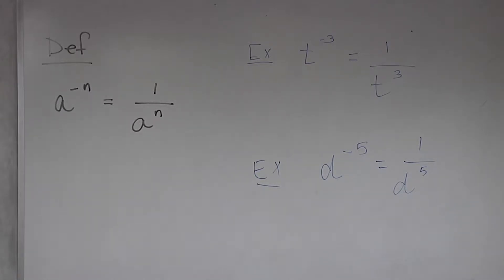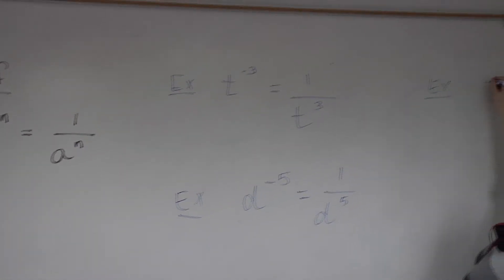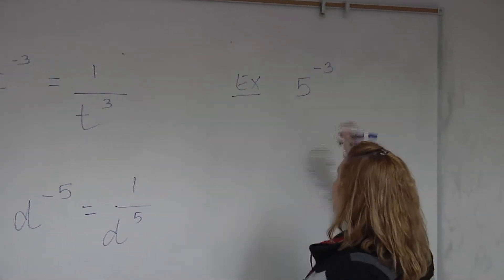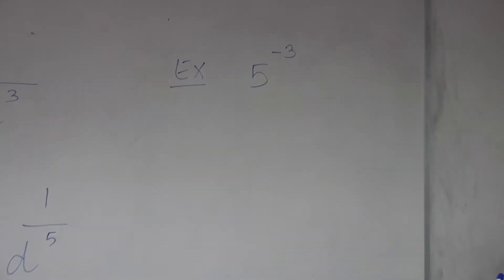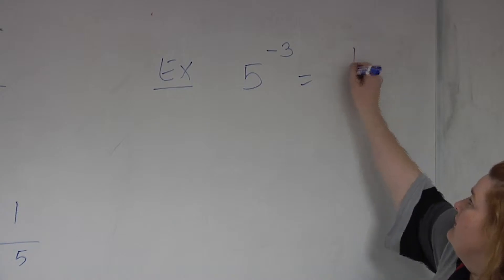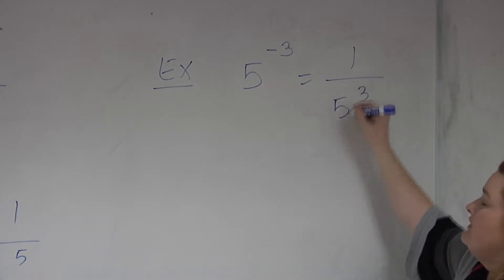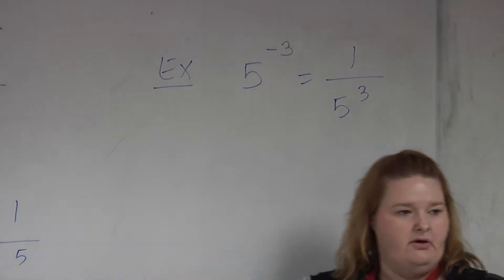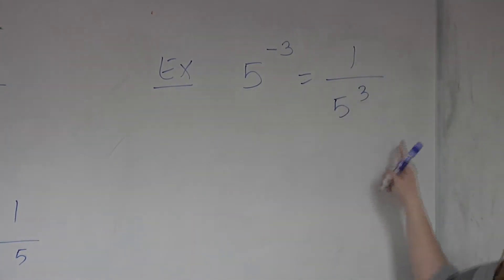And what if we change the latter to a number? 5 to the negative 3. 1 over 5 to the third. Now because this is a number, not a variable, we need to figure out what this 5 cubed is.